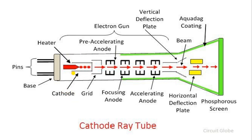So the cathode will emit when the heater heats up. We provide the voltage or current on the pins, the heater heats up — it is basically a rod. The heater will provide the electrons. When the heater gets heated up, the cathode will emit — the cathode will open and electrons will go in their path.